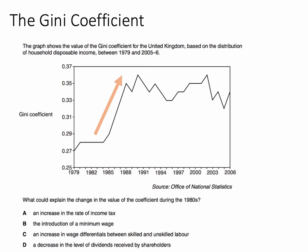We're looking for an answer which explains the rise in income inequality. An increase in the rate of income tax would have a reverse effect, because income tax is broadly speaking a progressive tax — marginal tax rates go up as incomes rise. A minimum wage would actually help reduce income inequality if it helps increase the pay of people towards the bottom end of the labour market.